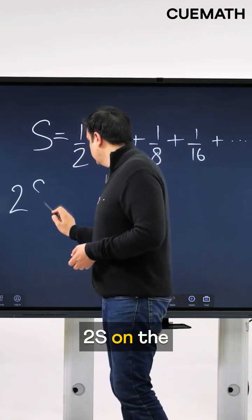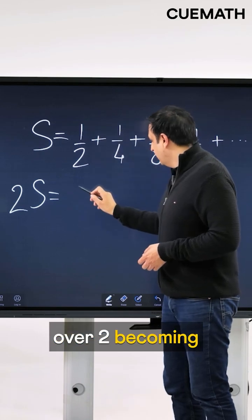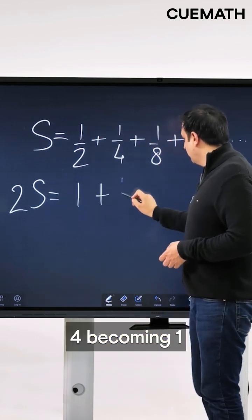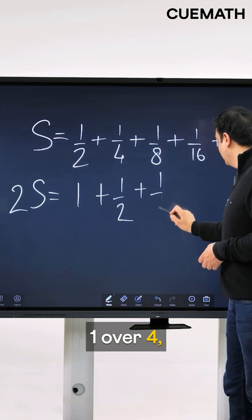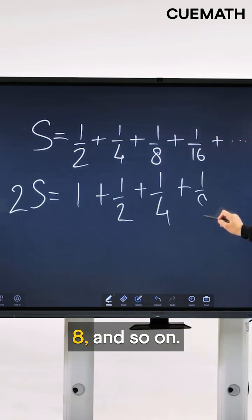So you get 2s on the left side and on the right side you will get 1 over 2 becoming 1, 1 over 4 becoming 1 over 2, 1 over 8 becoming 1 over 4, 1 over 16 becoming 1 over 8 and so on.